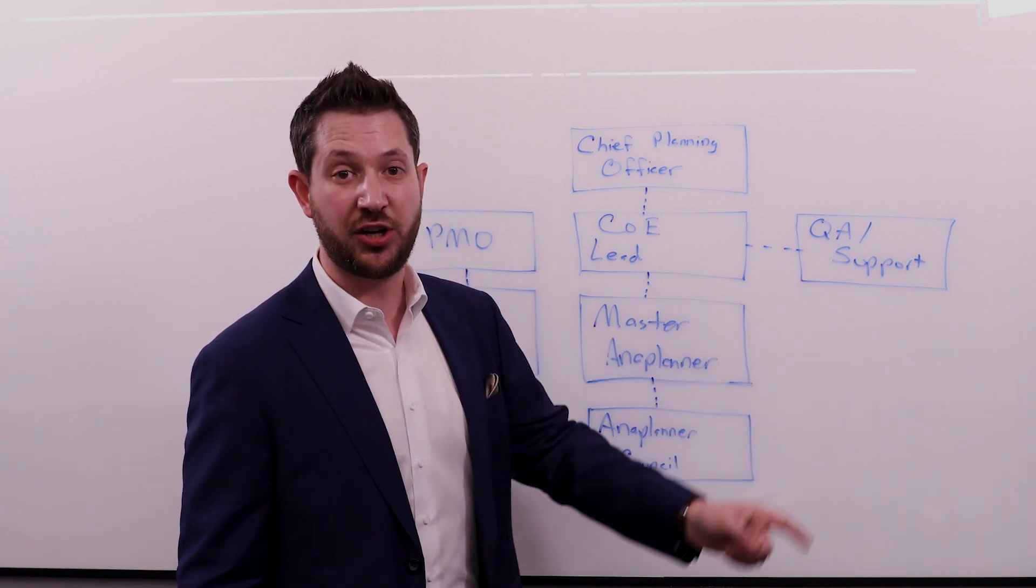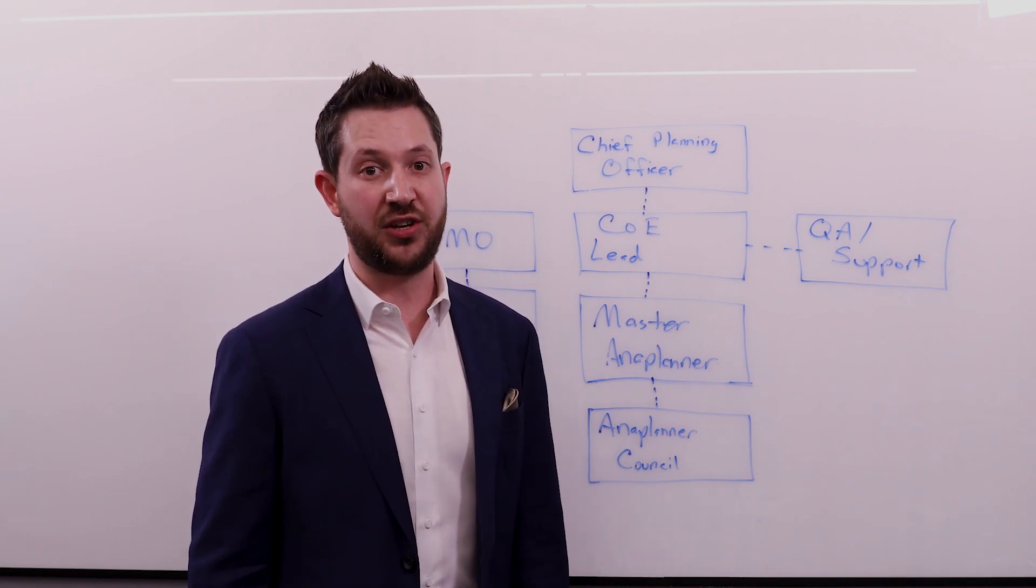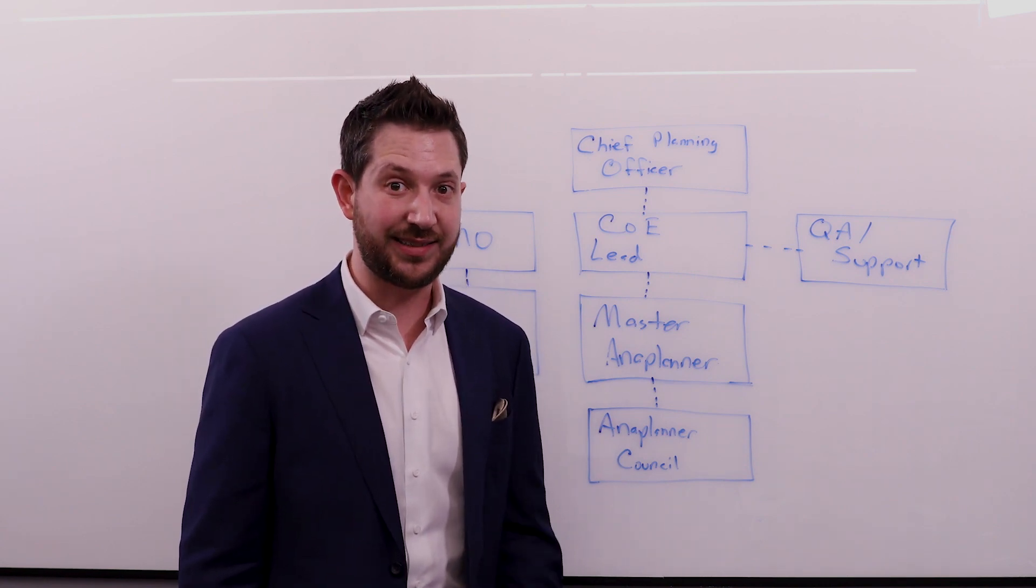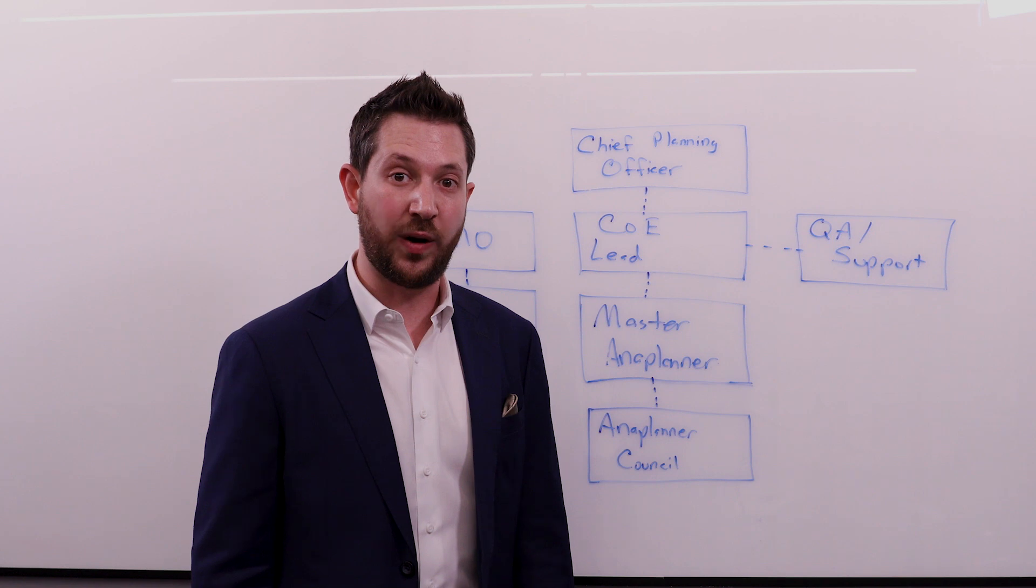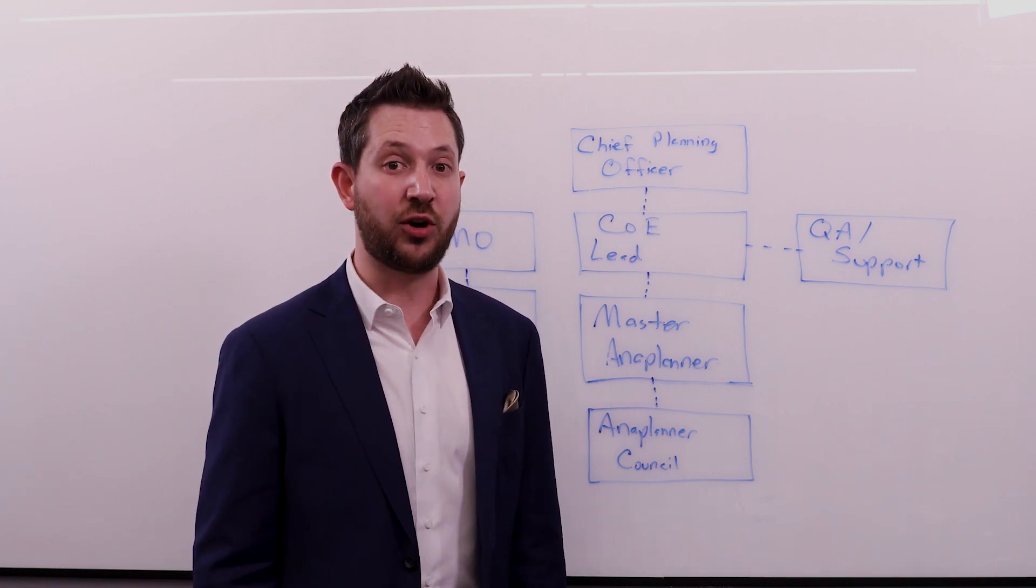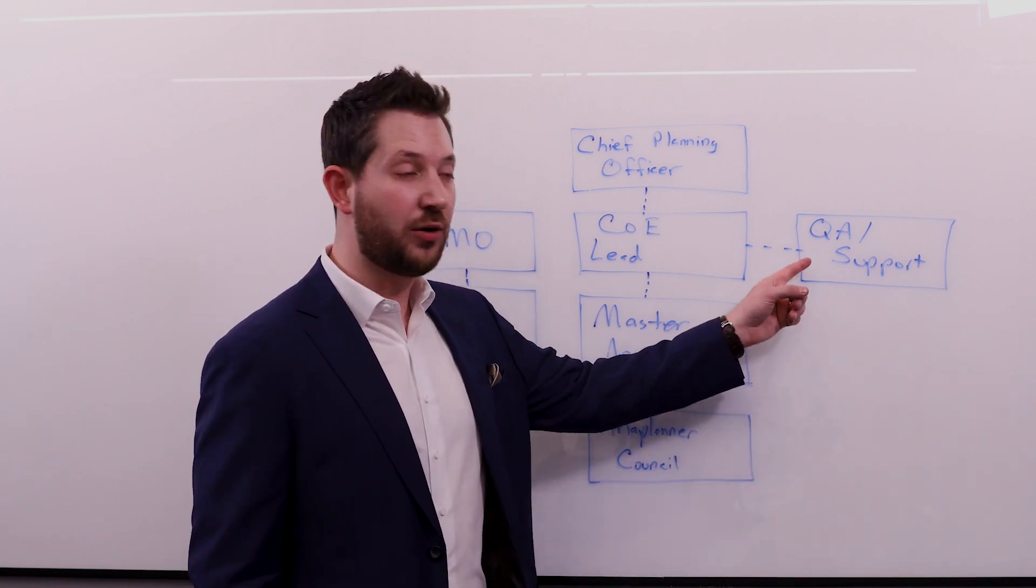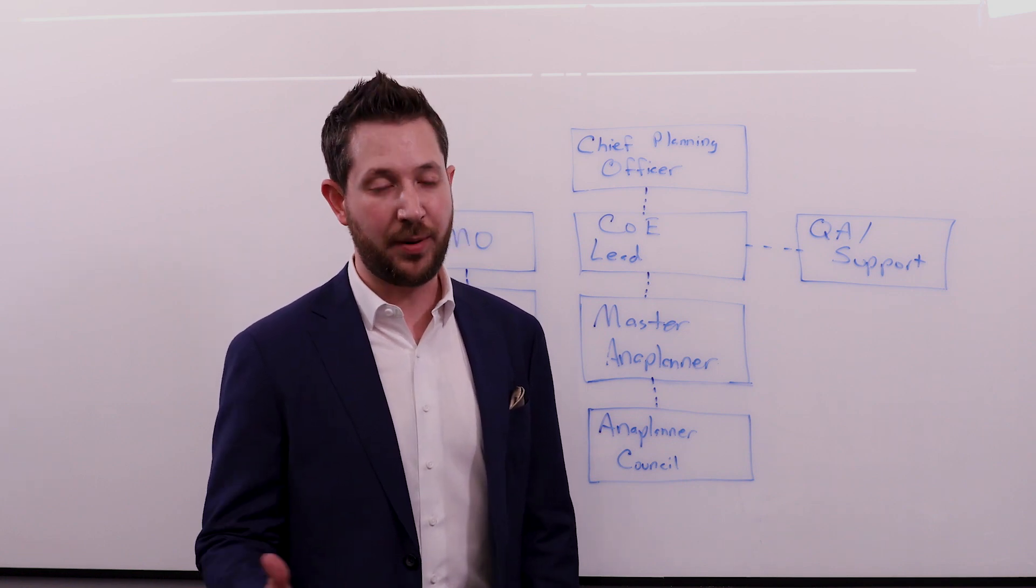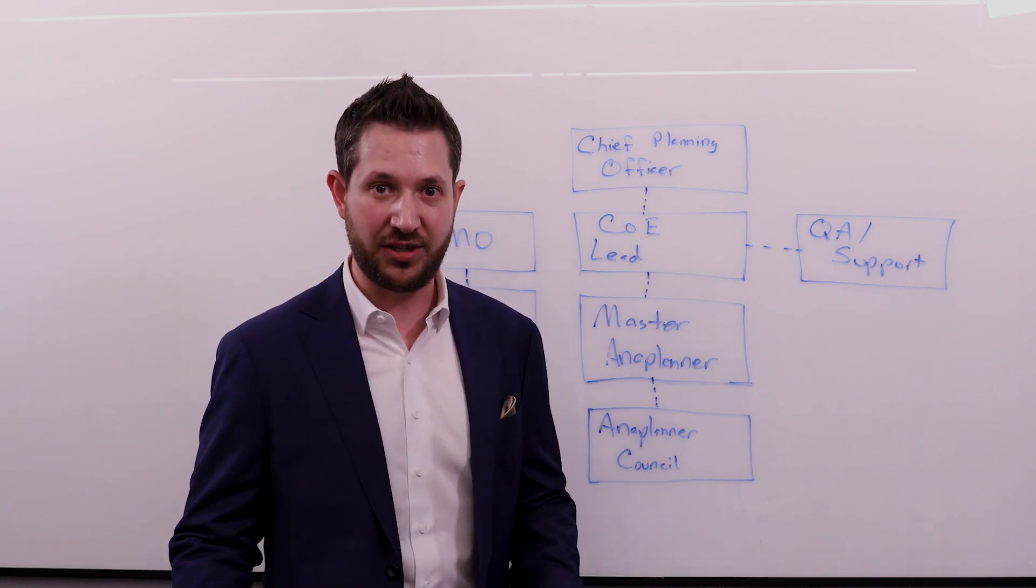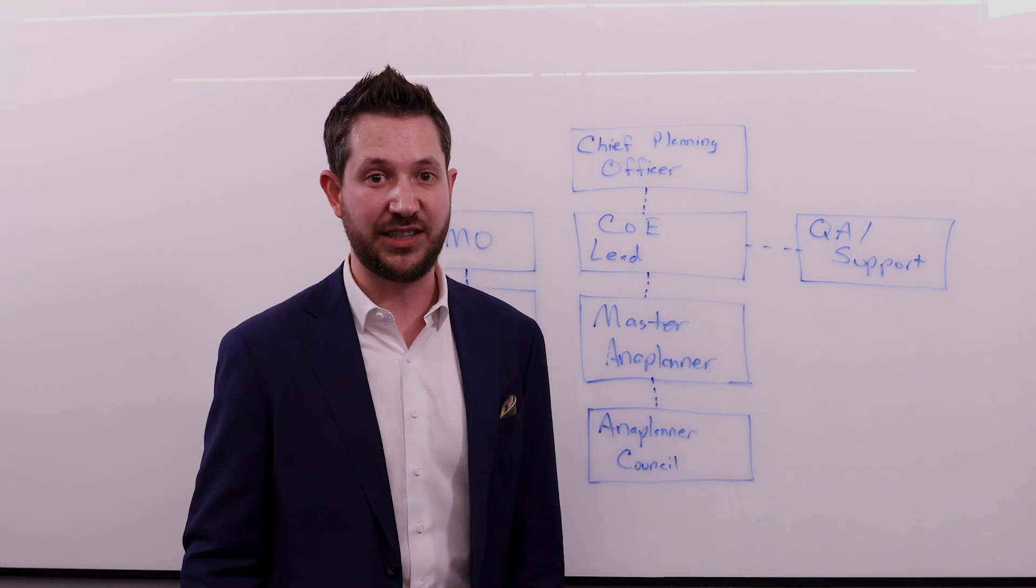And then as you go to production, you'll need a production support team to manage things like defects, defect tickets, support requests, and other things that'll come up from your end users. Often from an Anaplan perspective, we see this being one team, but depending on your company, that could be separate teams or owned elsewhere in the organization.